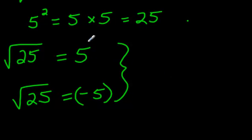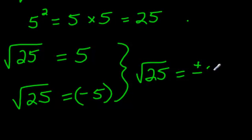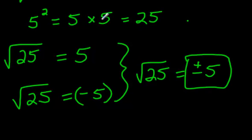although we normally just talk about the positive answer, if you want to be exactly right, here's the full answer. The square root of 25 is actually plus or minus 5. And that is the exact answer. Okay? Pretty picky.